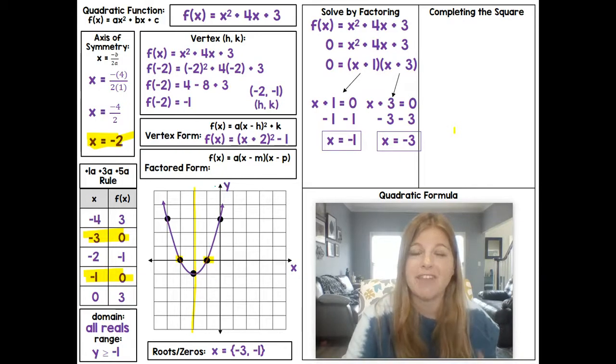Now I can also put this in factored form. Up here is the factored form of this equation, (x + 1)(x + 3). So factored form, this box here that I could fill in, ends up looking like f(x) = (x + 1)(x + 3).